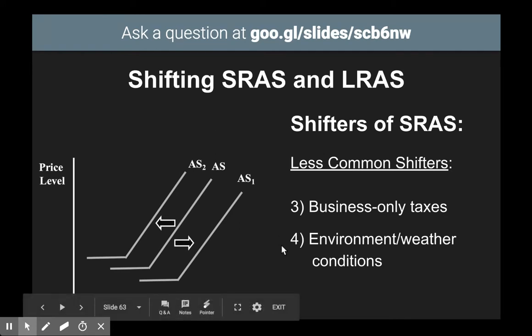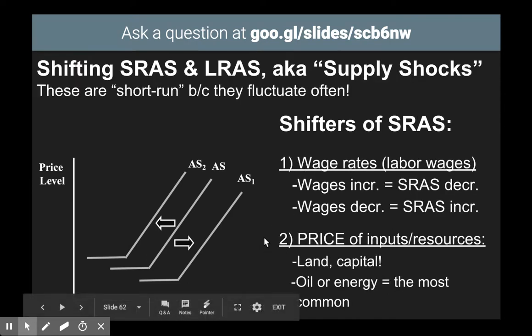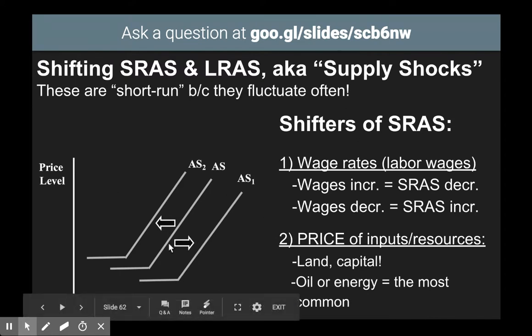The last shifter really sums up why these are short run shifters: weather or environment conditions can change fairly frequently. Think about a temporary seasonal storm destroying an orange farmer's crop — that negatively affects aggregate supply with a leftward shift. Next season there might not be that storm, so that's why it is short run. Business-only taxes, wages, and the price of inputs or resources can all fluctuate fairly often, which is why they shift the short run aggregate supply curve.